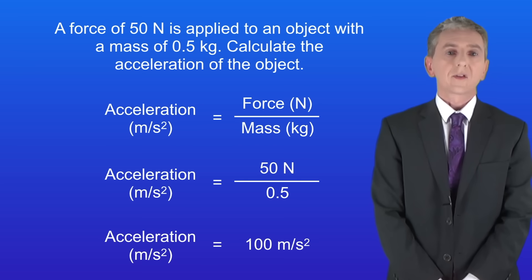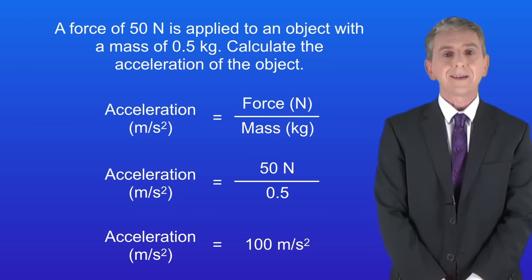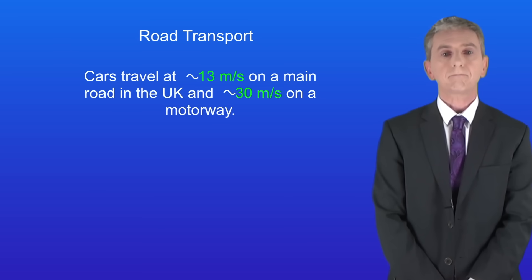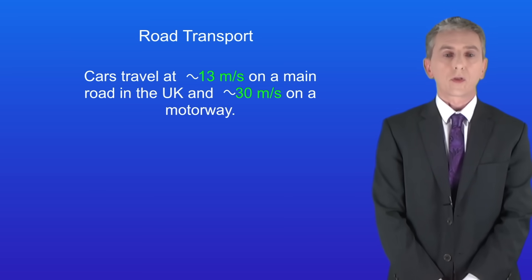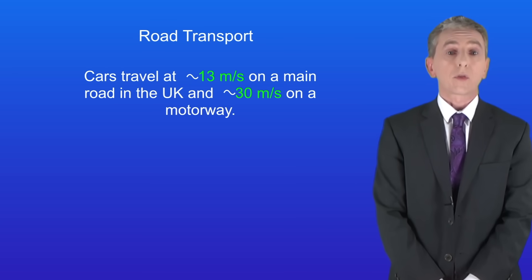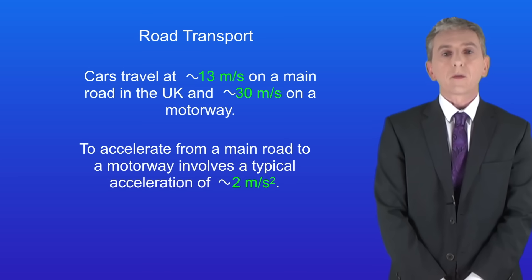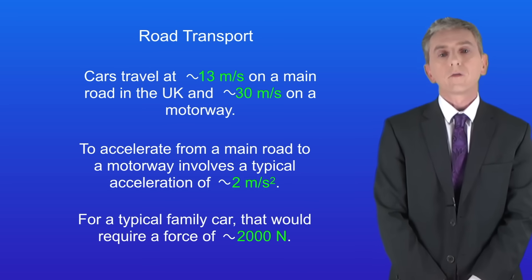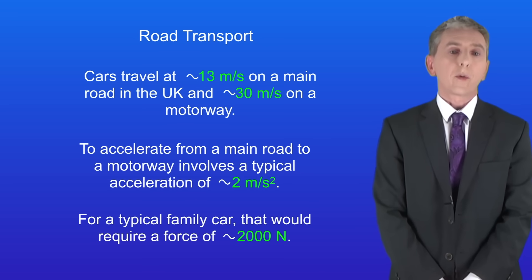In the exam you could be asked to estimate the speed, acceleration and forces involved in road transport. Cars travel around 13 meters per second on a main road in the UK and around 30 meters per second on a motorway. To accelerate from a main road to a motorway involves a typical acceleration of around 2 meters per second squared, and for a typical family car that would require a force of around 2000 newtons.